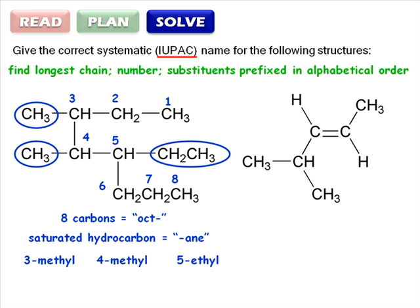We then combine all this information to give us the systematic name, 5-ethyl-3,4-dimethyloctane. Note that the alphabetic ordering disregards the di, so dimethyl, trimethyl, etc. always appear in the same position as methyl alone.